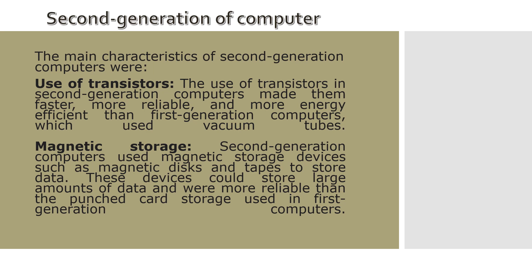Now let's quickly look at the second generation of computers. The main characteristics of second generation computers were the use of transistors and magnetic storage. The use of transistors made second generation computers faster, more reliable, and more energy efficient than first generation computers which used vacuum tubes. Magnetic storage devices such as magnetic disks and tapes were used to store data — these could store large amounts of data and were more reliable than the punched card storage used in first generation computers.